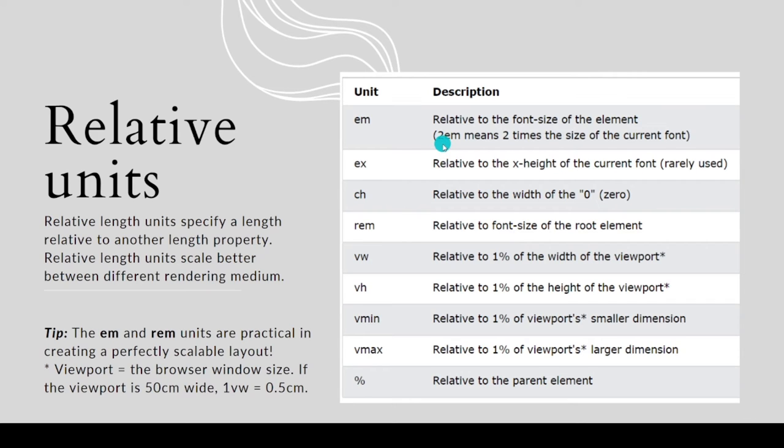and then if we give it a font size of 2em, it will take 2 times 16 pixels, which is 32 pixels. Relative length units scale better between different rendering media like mobile, desktop, and tablet, which is good for web development.